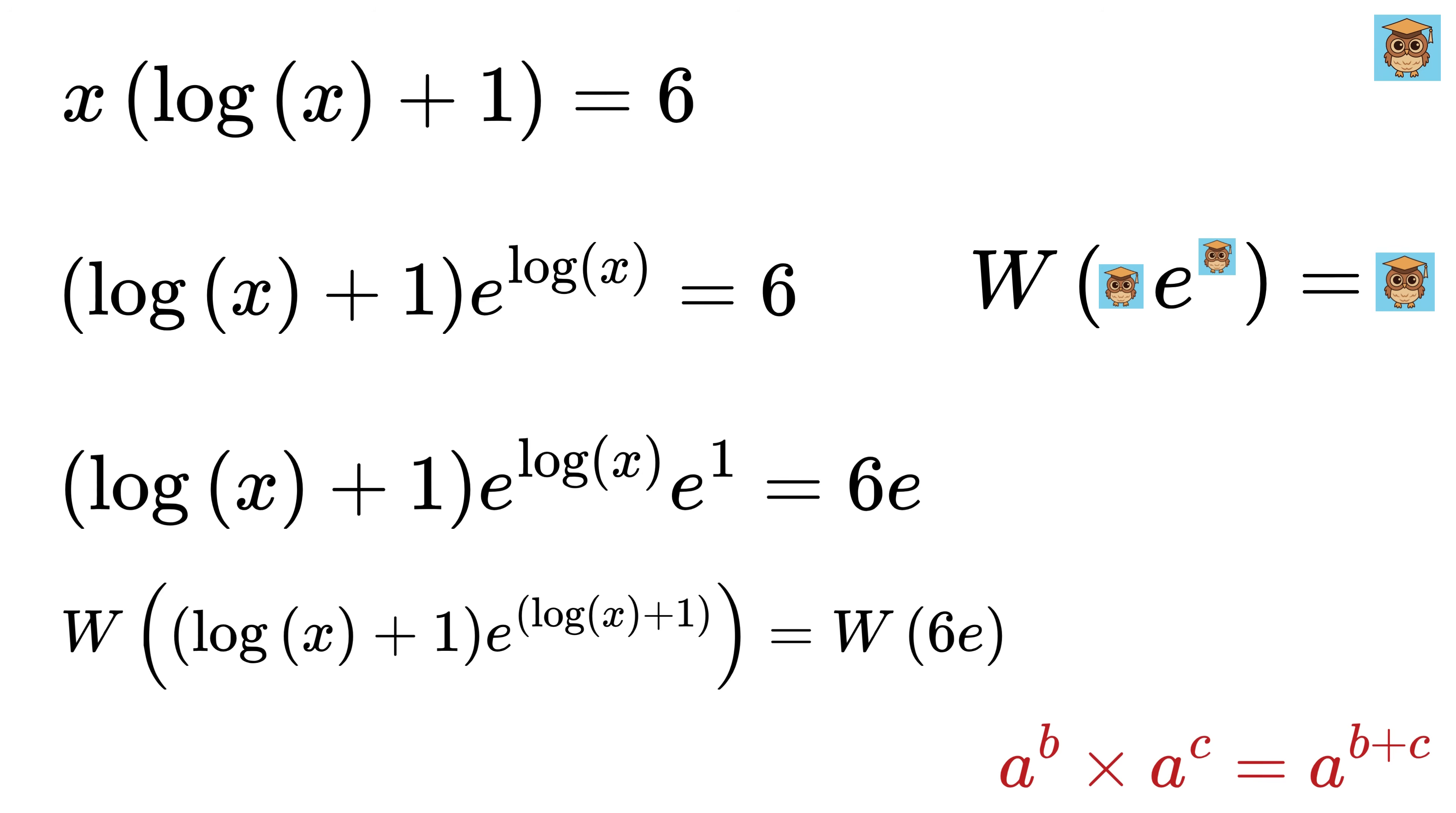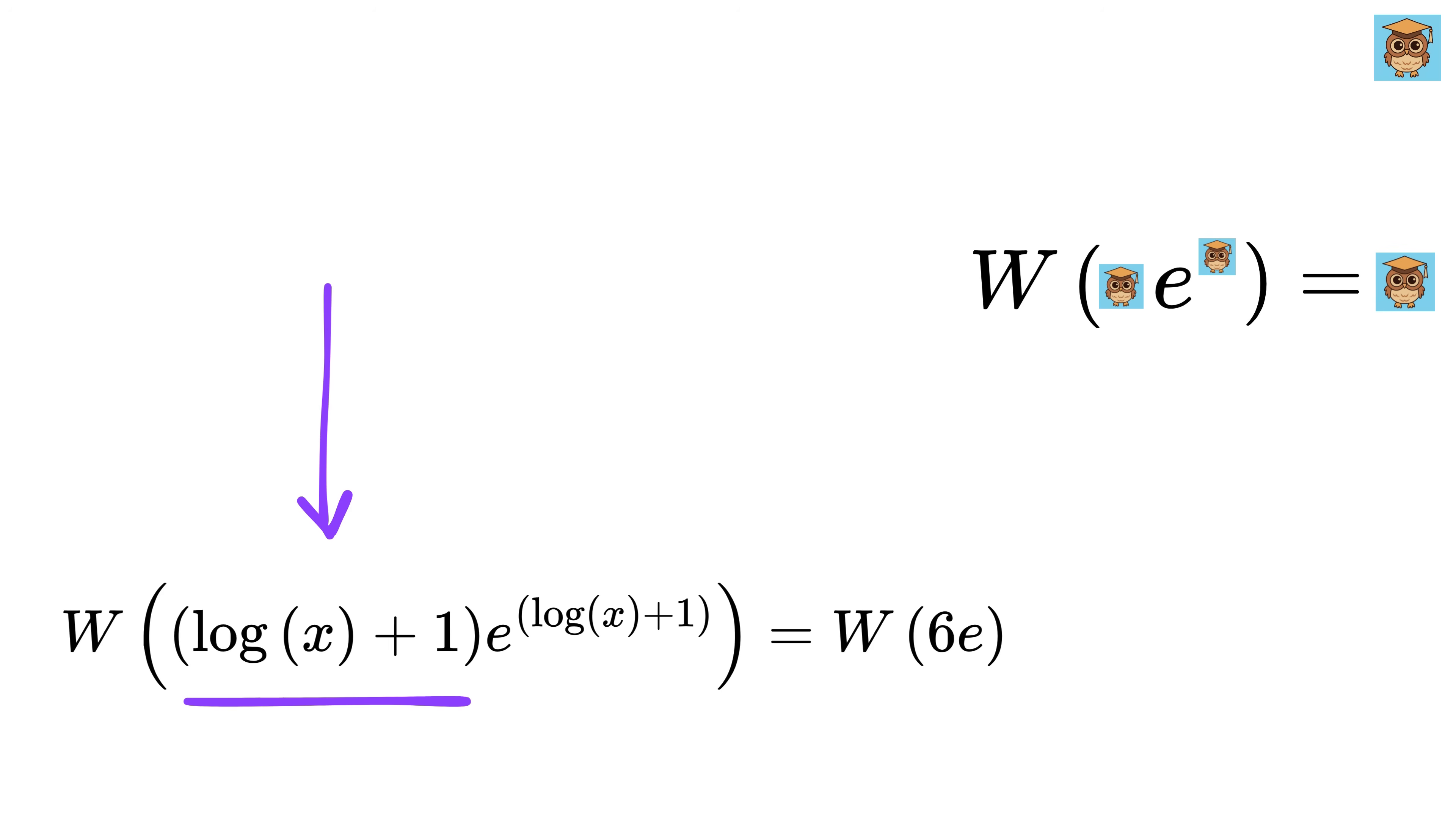Next, we will apply W function on both sides to get this. Oh, look here. We have log of x plus 1 as our omega function, and thus this entire expression will become log of x plus 1, which equals W of 6 times e.